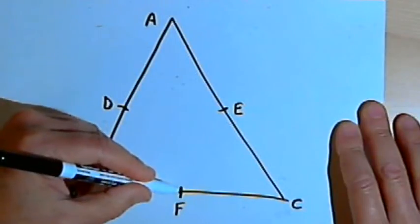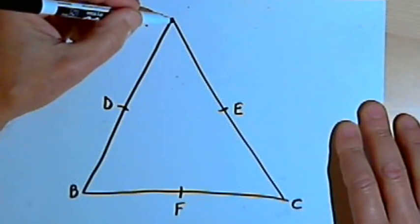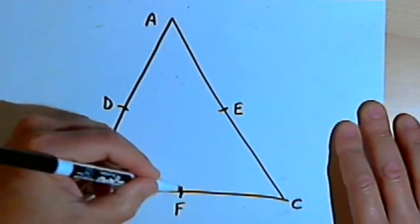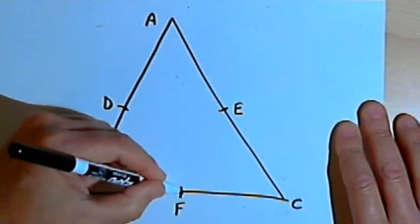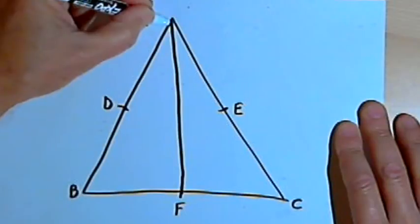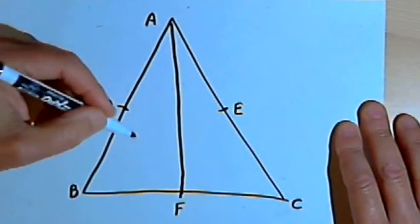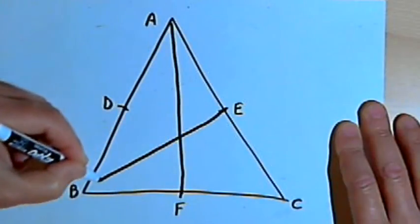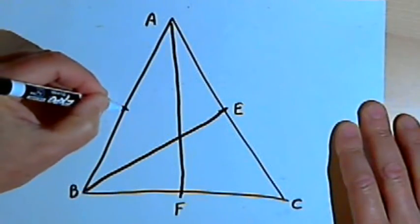Now if I connect a midpoint to the angle opposite to it, I create what's called a median. So I'm going to create a median by connecting points F and A. And I'll do the same thing to create two more medians. I'll connect E and B, and also points D and C.